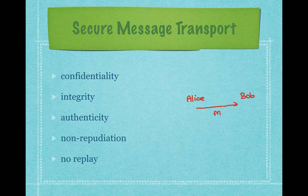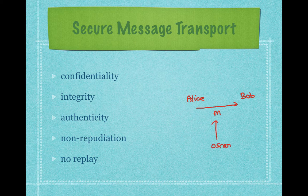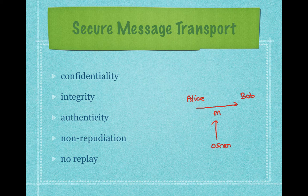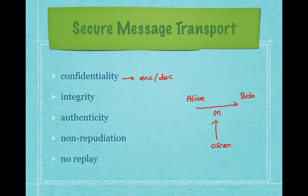This is her message M. In order to securely transport the message, we need certain properties. For example, an outsider — let's say Oscar — should not be able to see what the message content is. This property is called confidentiality. Confidentiality can be achieved by using encryption. The other party will decrypt the message to see what the message is. So confidentiality is provided using an encryption function.